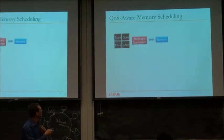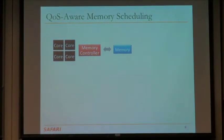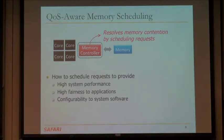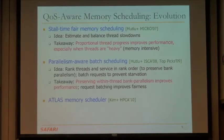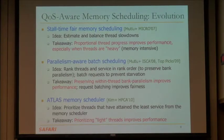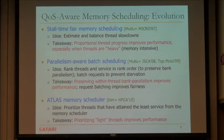So what we've been discussing — just to give you the context — is the memory controller getting requests from the cores and resolving memory contention by scheduling. How do you schedule these requests to provide high system performance, high fairness to applications, and configurability to system software? We've convinced ourselves that memory control needs to be aware of threads; otherwise there's no way of doing this. We talked about stall time for memory scheduling: the idea is to estimate and balance the thread slowdowns, giving proportional thread progress. This is good especially when threads are similarly memory intensive, though there were downsides — it's hard to implement and hard to figure out the slowdowns.